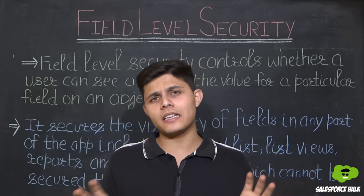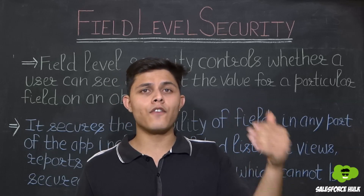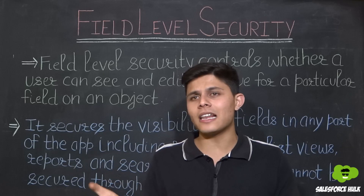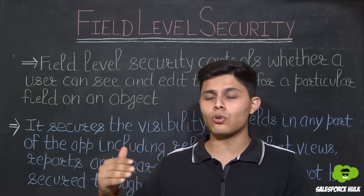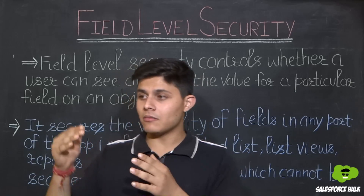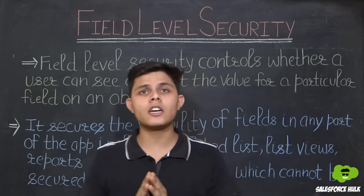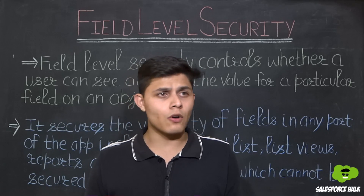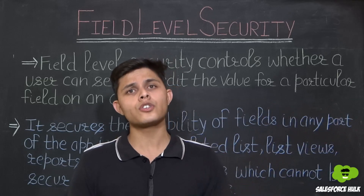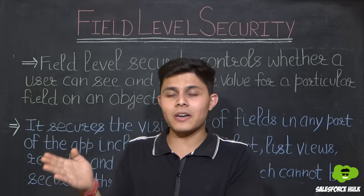If you want to secure fields using Page Layouts, you would create two Page Layouts. On the first one you put the Email and Phone fields for users you want to show those values to, and on the second Page Layout you omit those fields. You assign both Page Layouts to different profiles, but it will only control the Detail Page and Edit Page of a record — it will not control List Views. What if they see that field's value on List View, Search Results, or Related Lists?